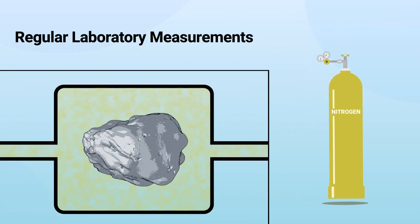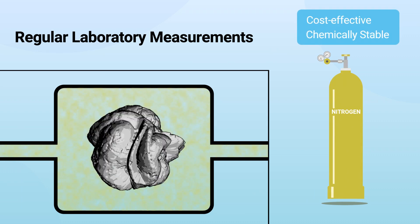For regular laboratory measurements, nitrogen is a cost-effective and chemically stable option that can be used for many materials.